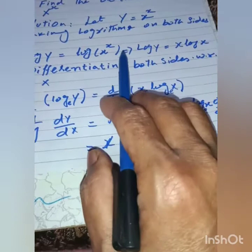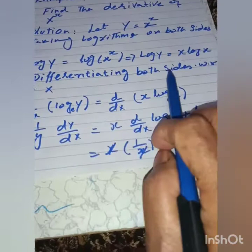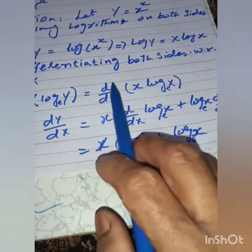Then it implies that log(y) = x·log(x). We have used the property that log(x^x) = x·log(x). Now, differentiating both sides with respect to x, we get d/dx of log(y) = d/dx of x·log(x).